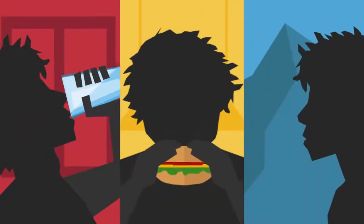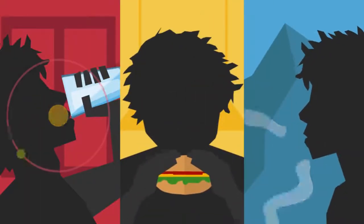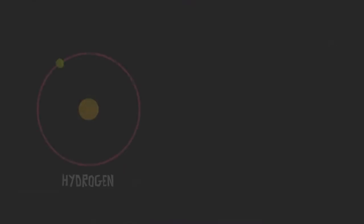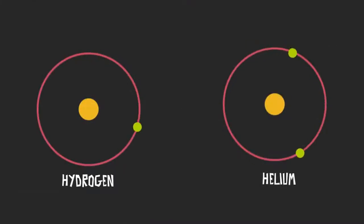Life needs a lot of different kinds of atoms to exist, like hydrogen, carbon, and oxygen. But when the universe began, there was only hydrogen and helium, the very simplest atoms of all, and nothing else. Where did the others come from, then?